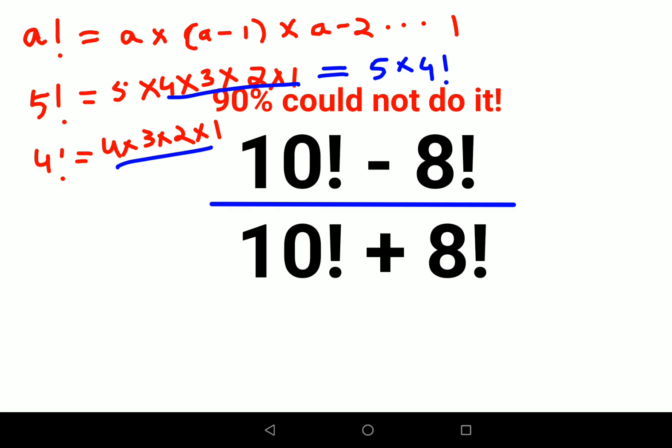Similarly here, 10 factorial can be written as 10 into 9 into 8 factorial minus 8 factorial. Here also I can write this as 10 into 9 into 8 factorial plus 8 factorial.